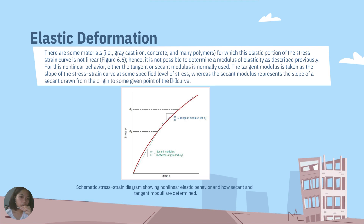There are some materials — for example, gray cast iron, concrete, and many polymers — for which the elastic portion of the stress-strain curve is not linear. Hence, it is not possible to determine a modulus of elasticity as described previously. For this nonlinear behavior, either the tangent or secant modulus is normally used. The tangent modulus is taken as the slope of the stress-strain curve at some specified level of stress, whereas the secant modulus represents the slope of a line drawn from the origin to some given point on the stress-strain curve.